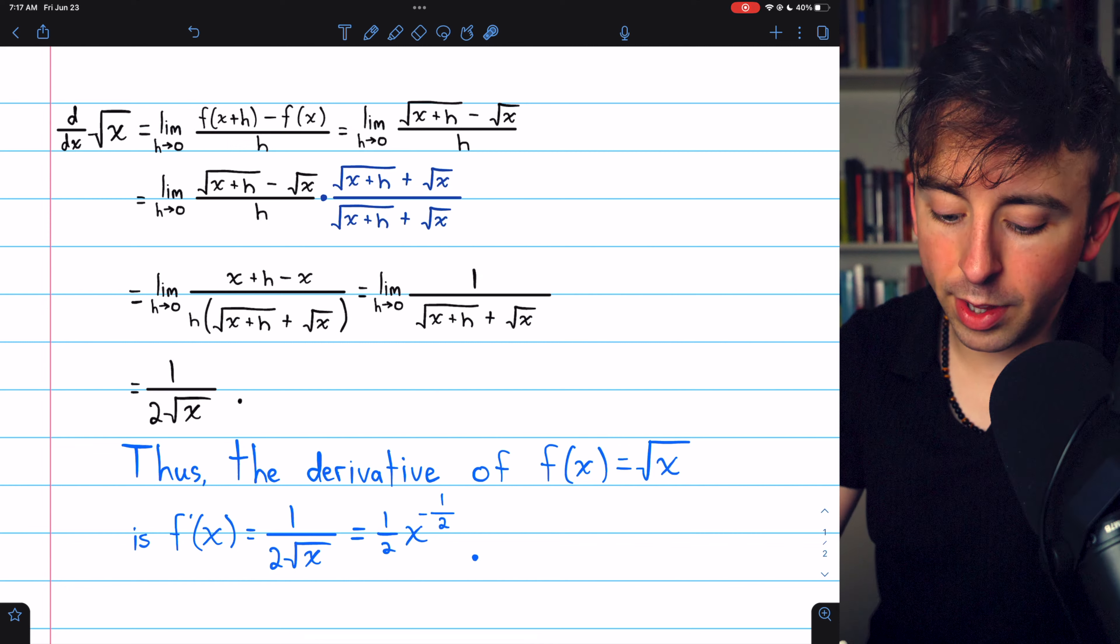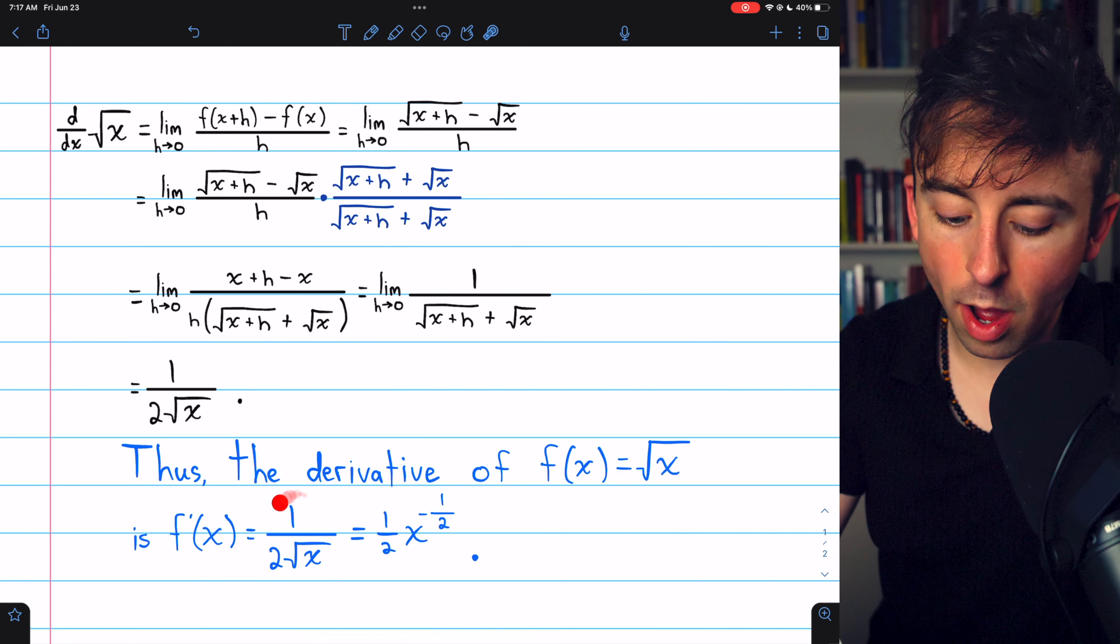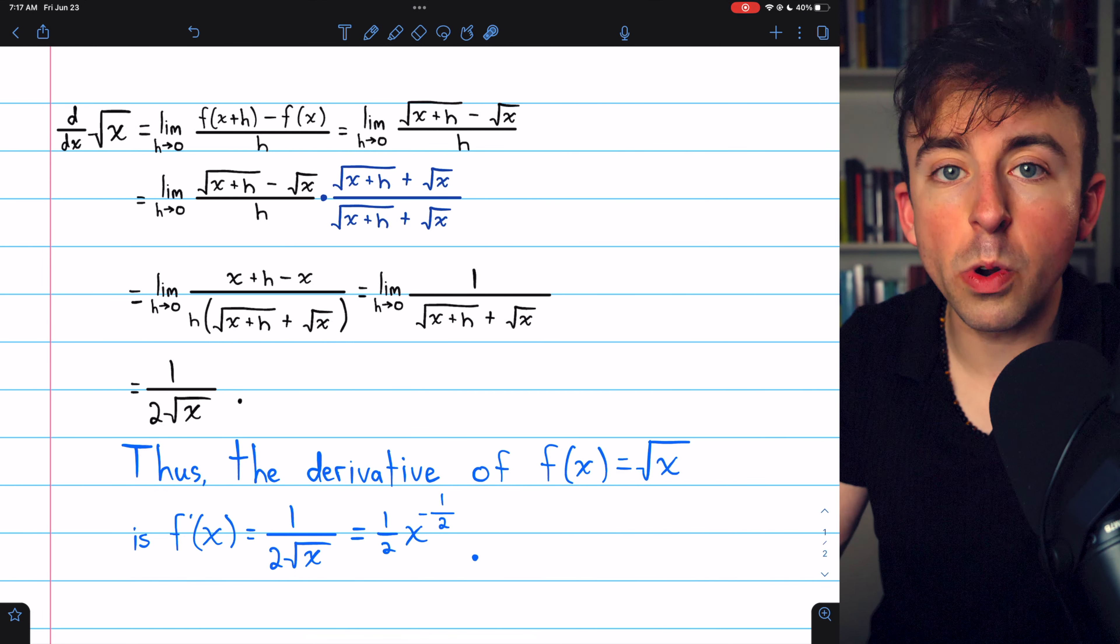Thus, we've proven that the derivative of the square root of x is one over two root x, which if you prefer, you could write as one half times x to the negative half.